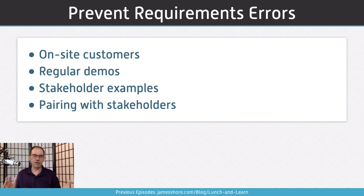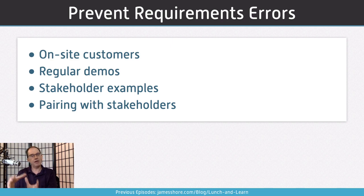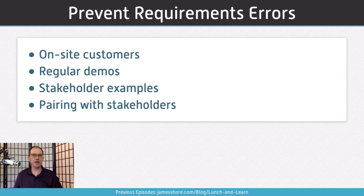Don't ask for examples about login or simple stuff unless it's really complicated. Do ask for examples around things stakeholders understand that team members don't. The final technique is sitting down and pairing with your stakeholders around things you need to iterate on — the user interface can be useful here, refining your way into what you need. Those are all great ways of preventing requirements errors, but I don't think any of those would have helped us here because nobody knew we had a mistake.